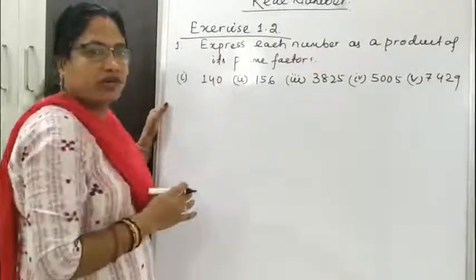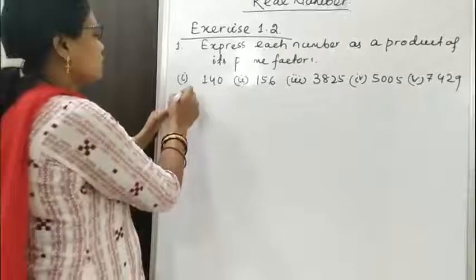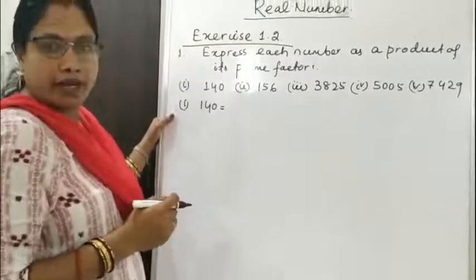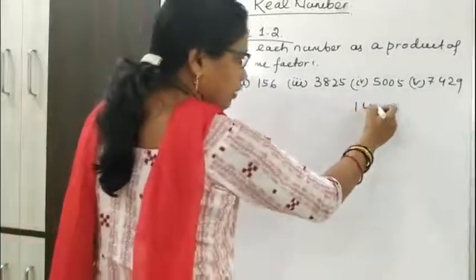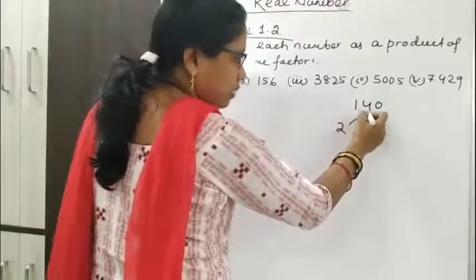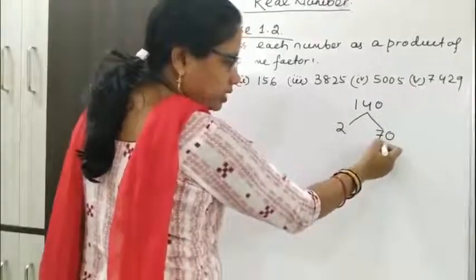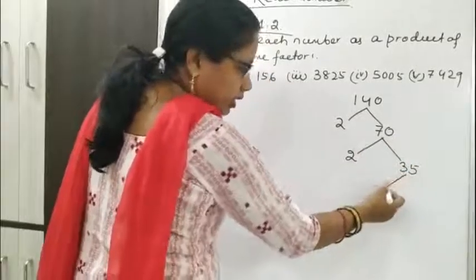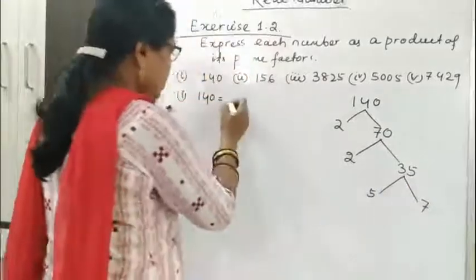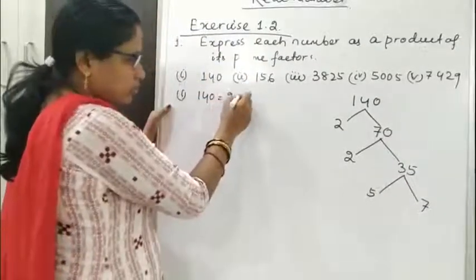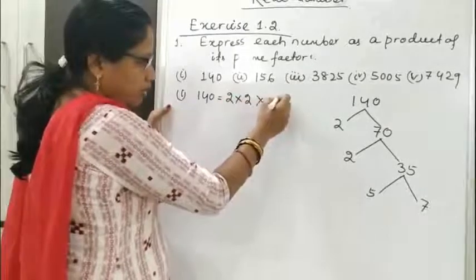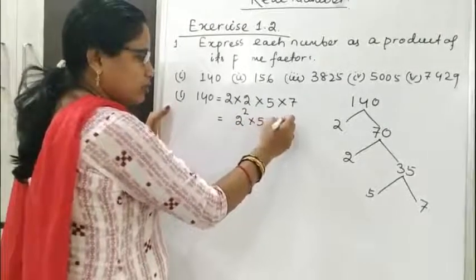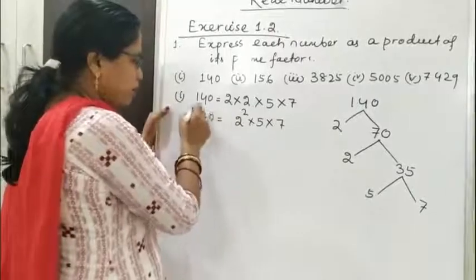So let us first find the prime factorization of 140. 140 is divisible by 2, so 140 = 2 × 70. Again, 70 is divisible by 2, so 2 × 35. Then 35 is divisible by 5 × 7. So 140 = 2 × 2 × 5 × 7, which equals 2² × 5 × 7. This is the prime factorization of 140.